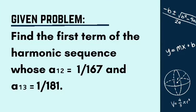The given problem is: find the first term of the harmonic sequence whose a₁₂ = 1/167 and a₁₃ = 1/181.